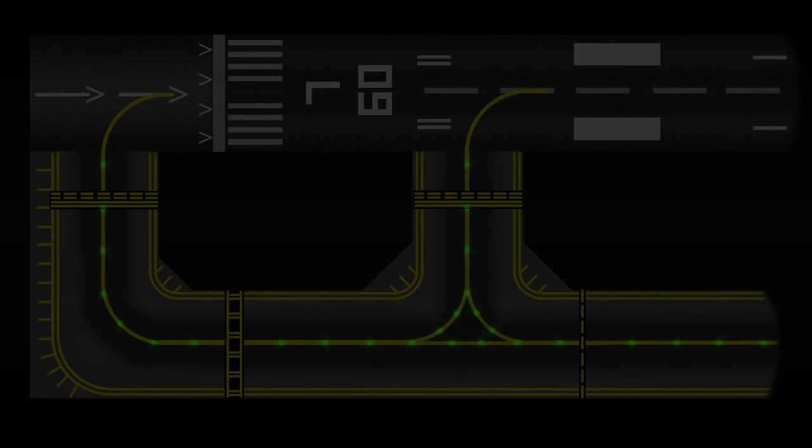So the first set of lights are the taxiway centerline lights, which are steady green lights embedded along the centerline. Next up, you have the taxiway edge lights, which are blue and help to define the edges of the taxiway.